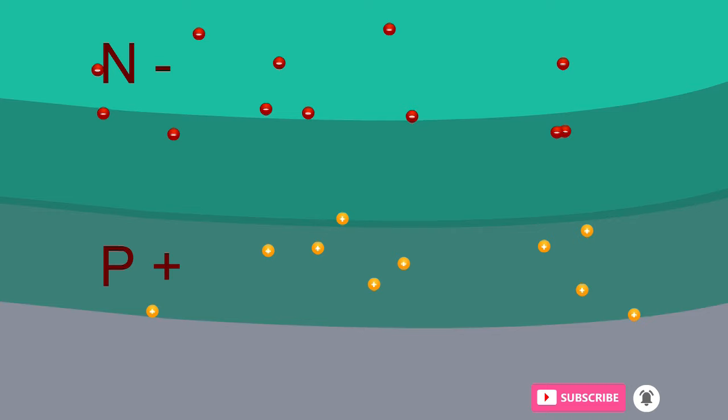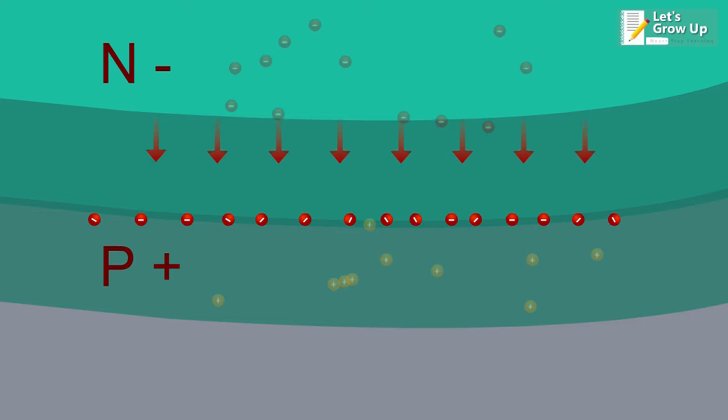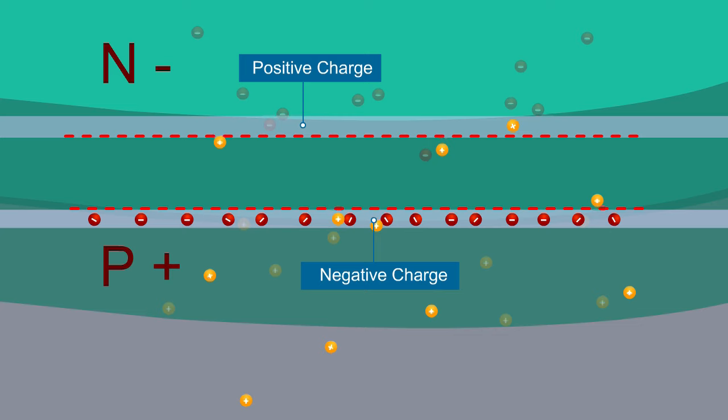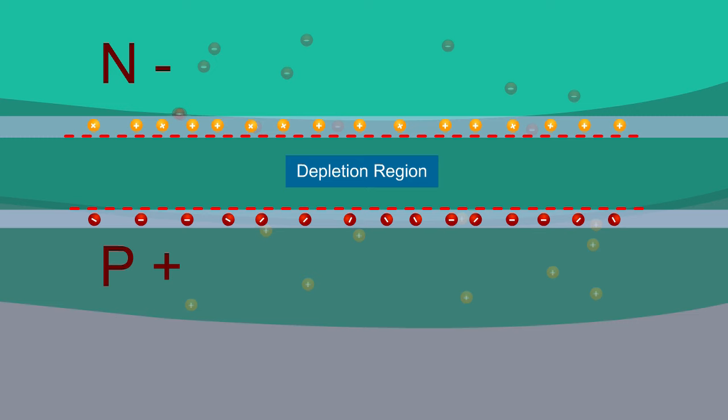Similarly, the holes of the p-type material try to reach the n-region creating a positively charged layer. This region between the two layers is known as the depletion region of the semiconductor. Sunlight penetrates the top thin layer easily to reach the depletion region.